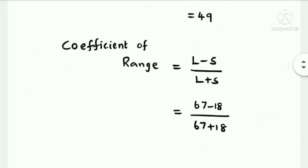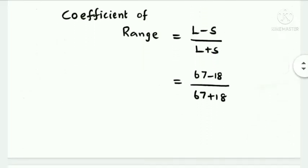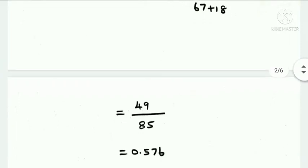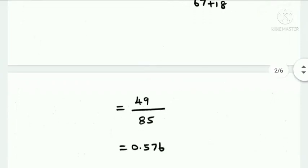The numerator is 67 minus 18 equals 49. The denominator is 67 plus 18 equals 85. So 49 divided by 85 gives the coefficient of range as 0.576.